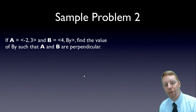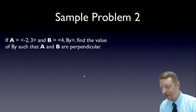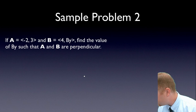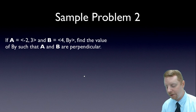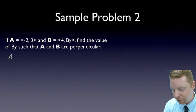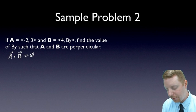Let's take a look at one more sample problem before we finish up. If vector A = <-2, 3> and B = <4, By>, only doing two-dimensional vectors here, find the value of By such that A and B are perpendicular. To do this, we have to remember that the dot product of perpendicular vectors is zero, so we're looking for where A·B equals zero.